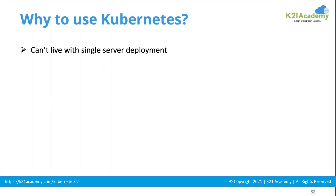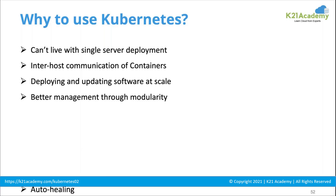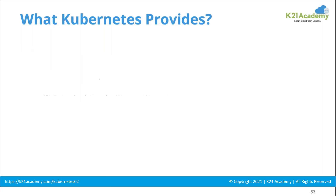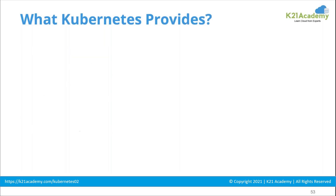When you can't live with a single server in deployment, when you want inter-host communication for containers, when you are deploying and updating software frequently, when scaling is needed, or you want better management capabilities or auto-healing — if something goes down, it should get recreated automatically — then the answer is Kubernetes. And for logging and monitoring, Kubernetes also has better solutions to provide.